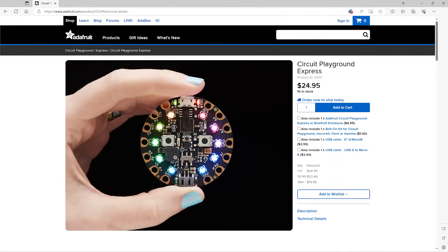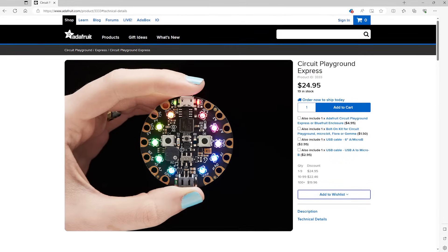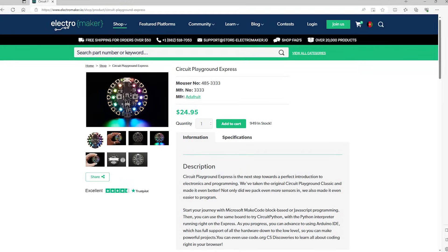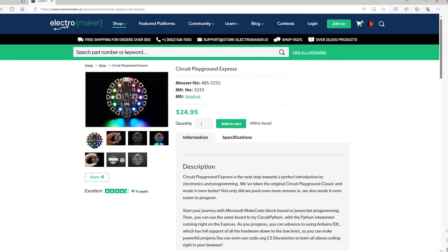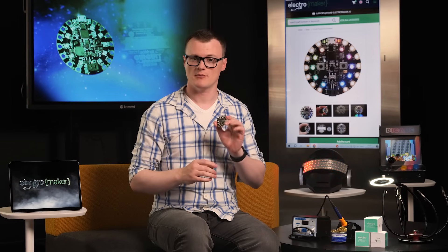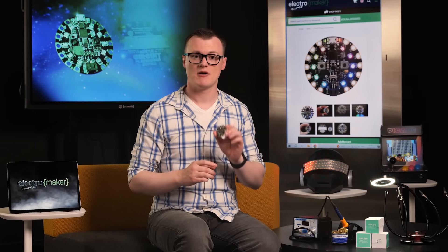So, with all of that out of the way, the Adafruit Circuit Playground Express is a development board that combines an AT-SAM-D21 processor with a multitude of different sensors and IO. Its circular shape makes it somewhat unique in the maker market, and its ability to be powered via USB and an external battery makes this useful for portable projects as well as classroom environments.